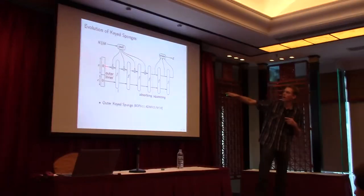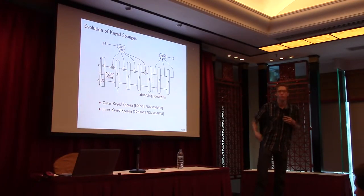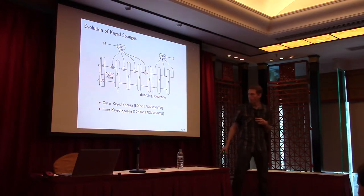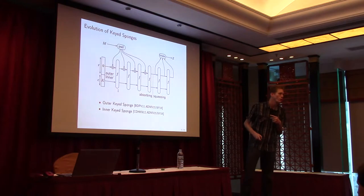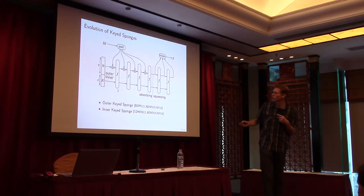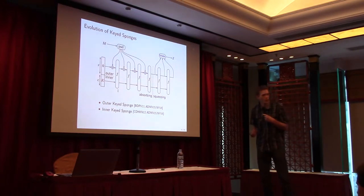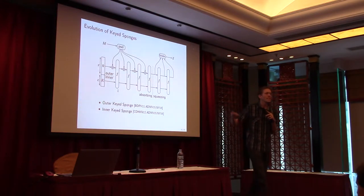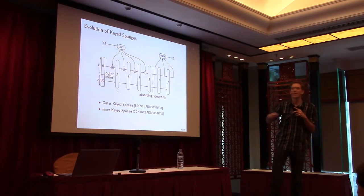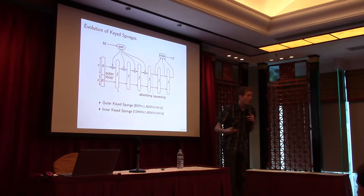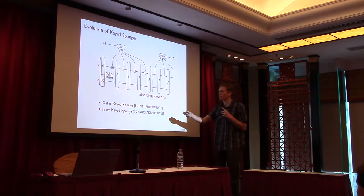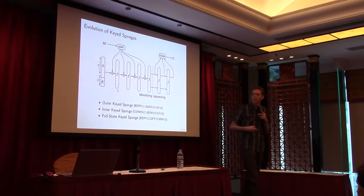It is called the outer keyed sponge because the key goes in the outer part. There is also an inner keyed sponge, where the key goes into the inner part to initialize the secret state. This scheme appeared before in Chang et al. 2012. We formalized it in 2015, and Naito and Yasuda analyzed these two schemes and derived improved bounds. At some point we noticed that you can improve the scheme: the capacity ensures secrecy and the extraction should leave the inner part untouched, but for absorption with a secret state there is no point in keeping this part untouched.